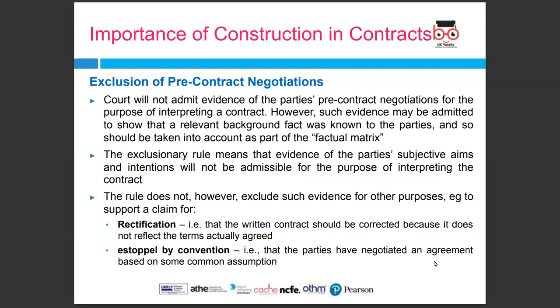Exclusion of pre-contract negotiations: a court will not admit evidence of the parties' pre-contract negotiations for the purpose of interpreting a contract. However, such evidence may be admitted to show that a relevant background fact was known to the parties and should be taken into account as part of the factual matrix. The exclusionary rule means that evidence of the parties' subjective aims and intentions will not be admissible for the purpose of interpreting the contract. The rule does not, however, exclude such evidence for other purposes — for example, to support a claim for rectification, or estoppel by convention where the parties have negotiated an agreement based on some common assumption.